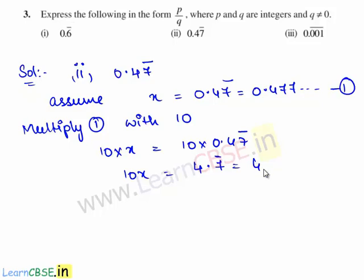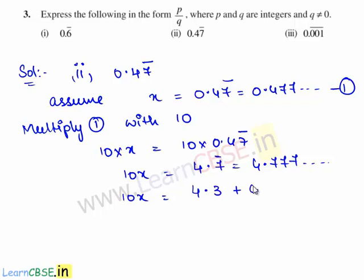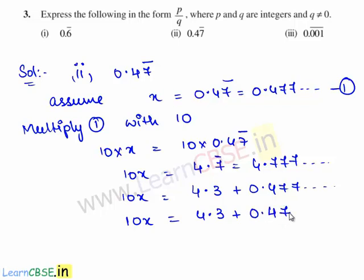This gives 10x is equal to 4.7 bar, which is 4.777 and so on. Here 4.777 and so on can also be written as 4.3 plus 0.477 and so on. So this is 10x is equal to 4.3 plus 0.47 bar.